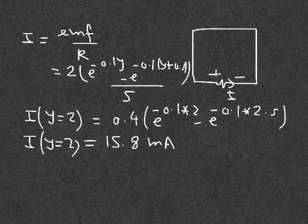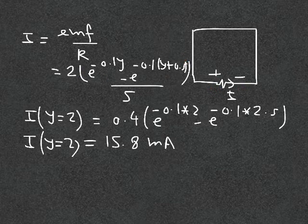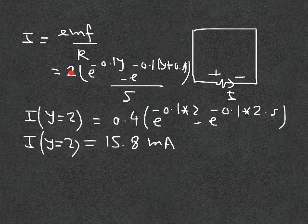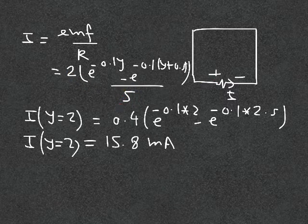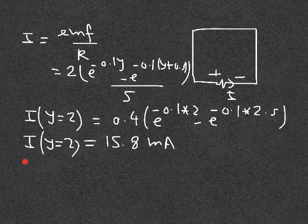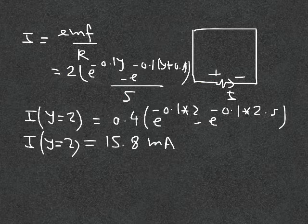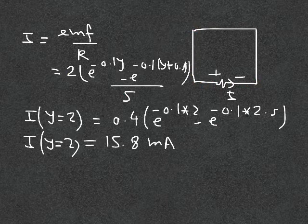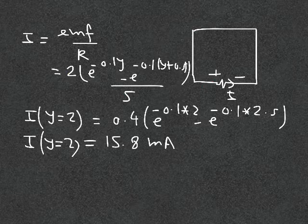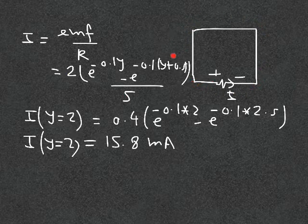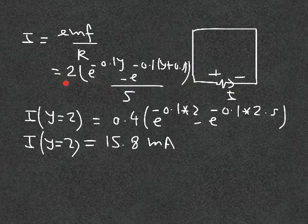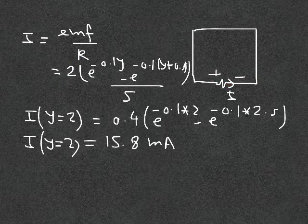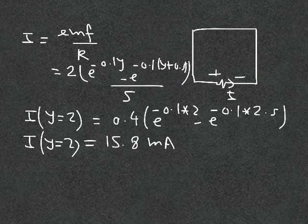The current is the EMF divided by the resistance. Since the EMF is positive the current flows in the established direction. Dividing by 5 ohms gives a final answer of 15.8 milliamperes. This same result could be obtained by treating the loop as four pieces of wire, each creating its own potential in the magnetic field and summing all potentials — that alternative solution will be covered in the tutorial video that follows.